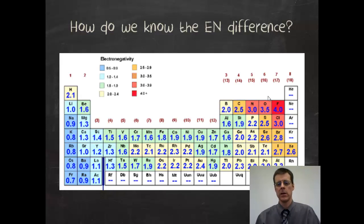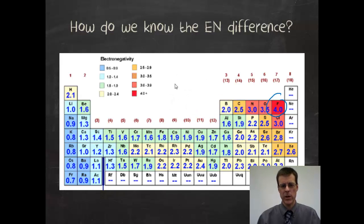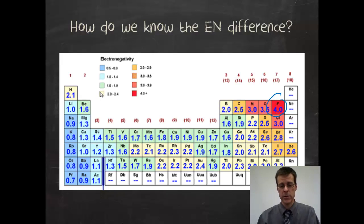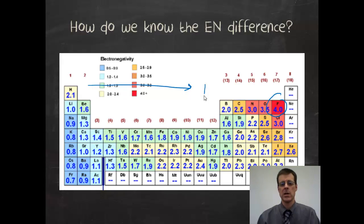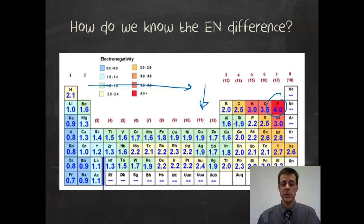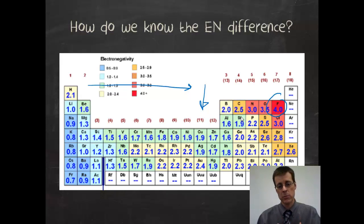The second way is knowing the trend: left to right across the periodic table, electronegativity increases; top to bottom, electronegativity decreases. That trend will help answer most questions. If two elements are close together on the periodic table, they'll be close together in electronegativity and will likely form a nonpolar covalent bond.